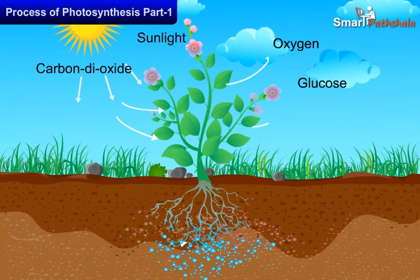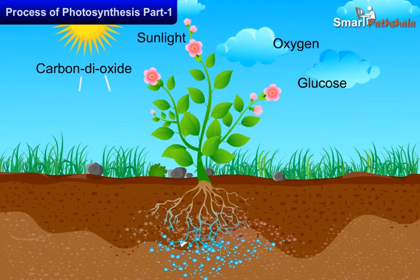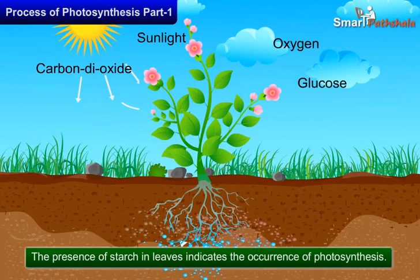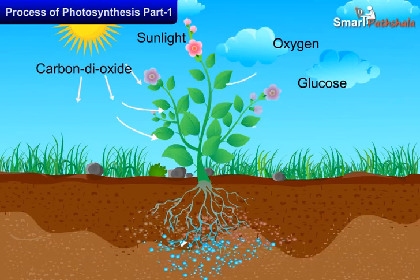The carbohydrates ultimately get converted into starch. The presence of starch in leaves indicates the occurrence of photosynthesis. Starch is also a carbohydrate.